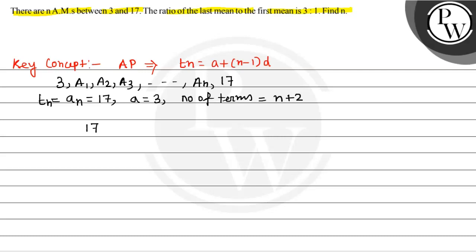So now, the last term 17 is equal to A plus N plus 1 into D. So D equals 14 divided by N plus 1.